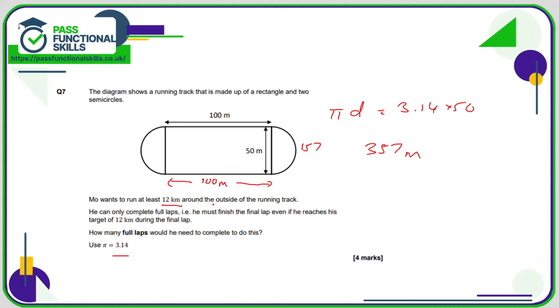Now Moe's running 12 kilometers, which is 12,000 meters. So how many times does 357 go into 12,000? Well, that's going to be 12,000 divided by 357, and that comes to a total of 33.61. So to do exactly 12 kilometers, Moe needs to run 33.61 laps. But we're told that he finishes the final lap even if he's completed 12k during that final lap, so therefore we're going to round this up to 34 laps.